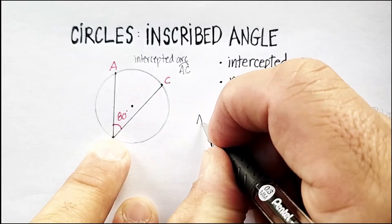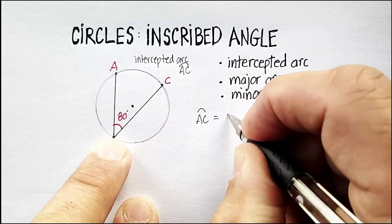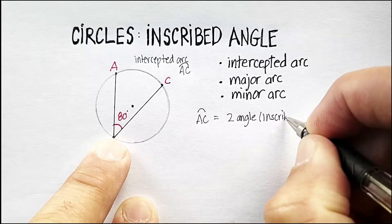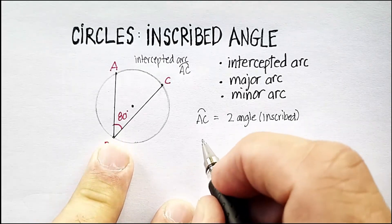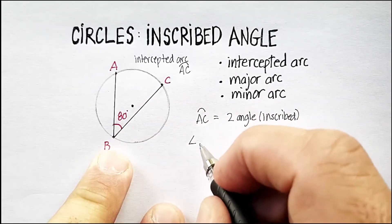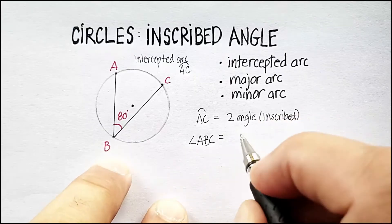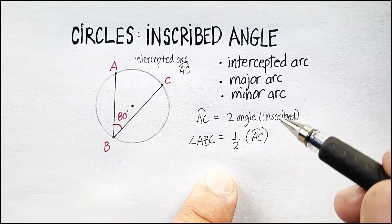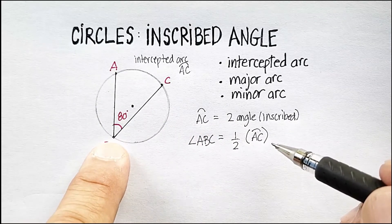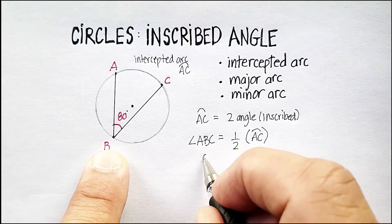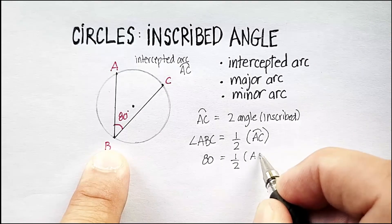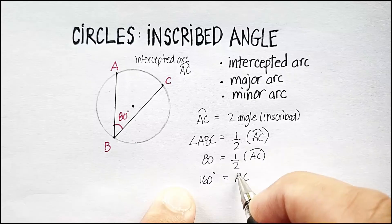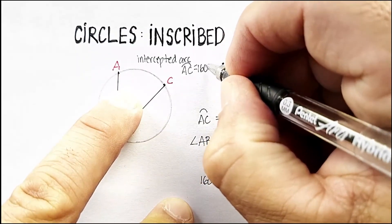So, let's try this. Arc AC is equal to two times the angle, an inscribed angle. Or, the other way of saying that is that the angle, and in this case angle ABC, is equal to one half of the intercepted arc. So, either one of these two formulas will work. And you can just go ahead and just plug in numbers as you need to. Now, notice that if angle ABC is 80, that's a given, then one half of the arc, just multiply both sides by two, my intercepted arc is 160 degrees.